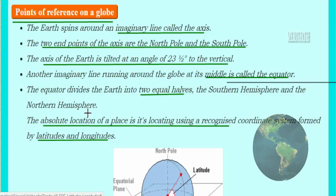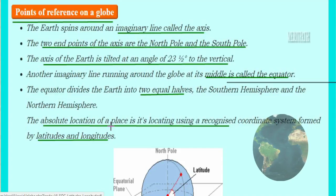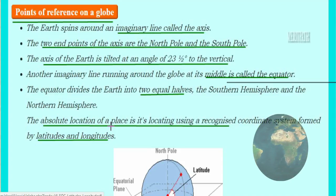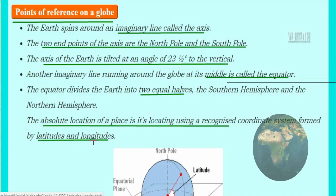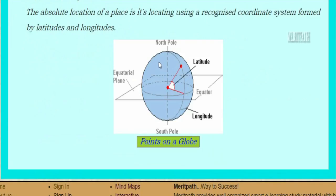Another imaginary line runs through the middle of the earth, known as the equator. The equator divides the earth into two equal halves — the southern hemisphere and the northern hemisphere. The absolute location of a place can be found using a coordinate system formed by latitudes and longitudes. The two poles — north pole and south pole — are also key reference points on the globe.